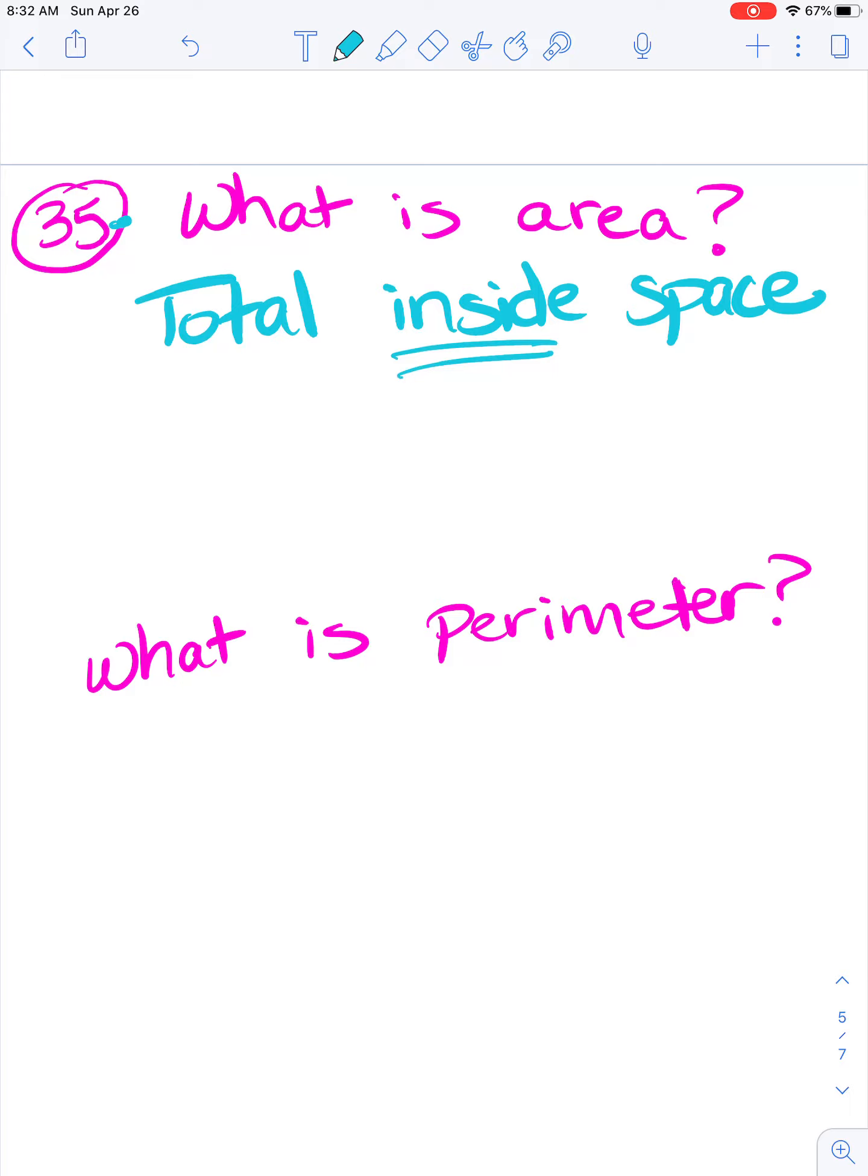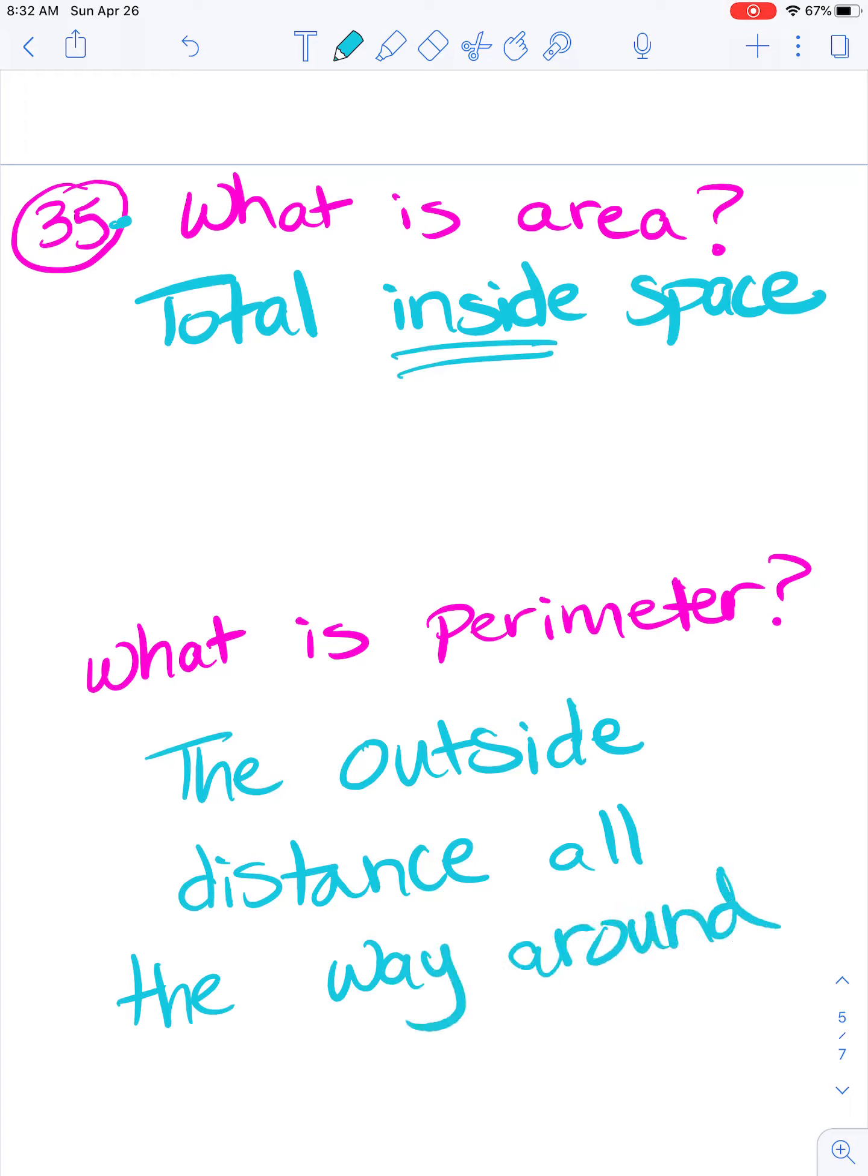Perimeter, perimeter, all the way around. Around, around the shape we go, shape we go, shape we go. Around, around the shape we go, perimeter. Add up all the sides you know, side you know, side you know. Add up all the sides you know, perimeter. So it is the outside distance all the way around. So if you just sing your songs you know your answer. That's it for today.